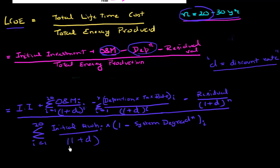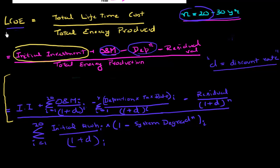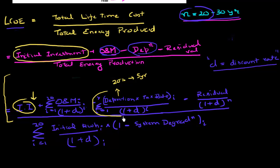From this equation, we can see how policy affects LCOE. A tax credit directly reduces the initial investment term in the numerator. Similarly, public policy can allow for accelerated depreciation — for instance, taking a 20% depreciation every year over five years — which also reduces the LCOE through the depreciation term.